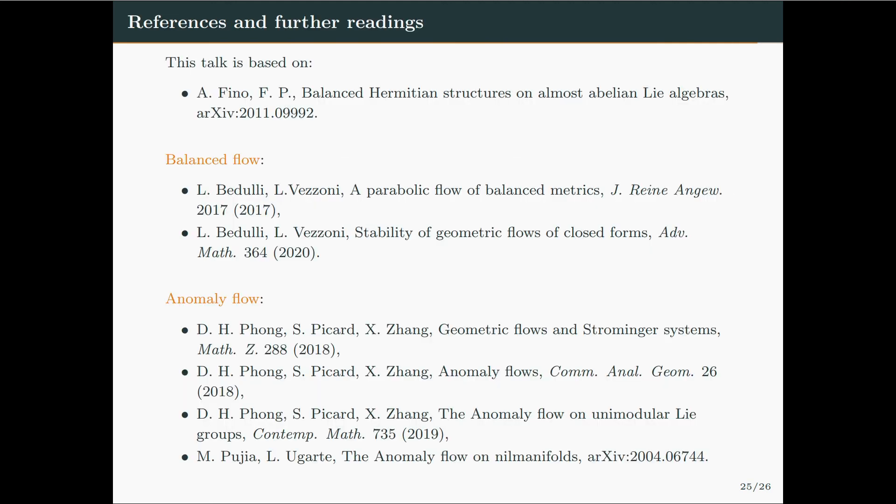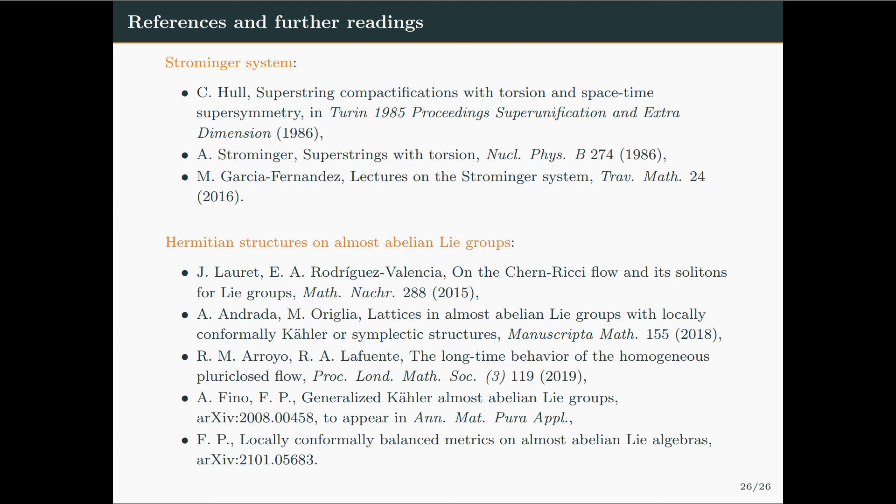So this concludes my talk. I'll just leave it with some references and further readings about the topics I've talked about. So there are some references about the balanced flow, the anomaly flow, about the Strominger system, and about Hermitian structures on almost abelian Lie groups. So I hope you found my talk interesting, and I hope to meet you at the Q&A session for this event.